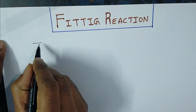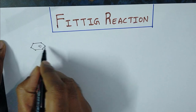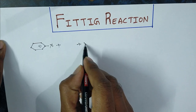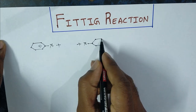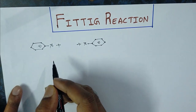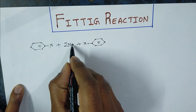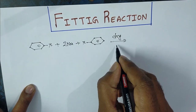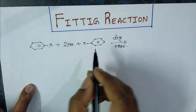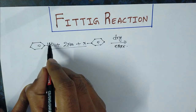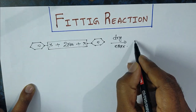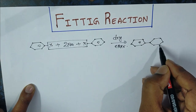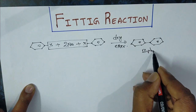So the general equation: aryl halide, that is halobenzene — take two moles, that is 2 C₆H₅X — two moles of halobenzene when reacted with two moles of sodium metal in the presence of dry ether, we get biphenyl. That is 2NaX is removed, and we get biphenyl.